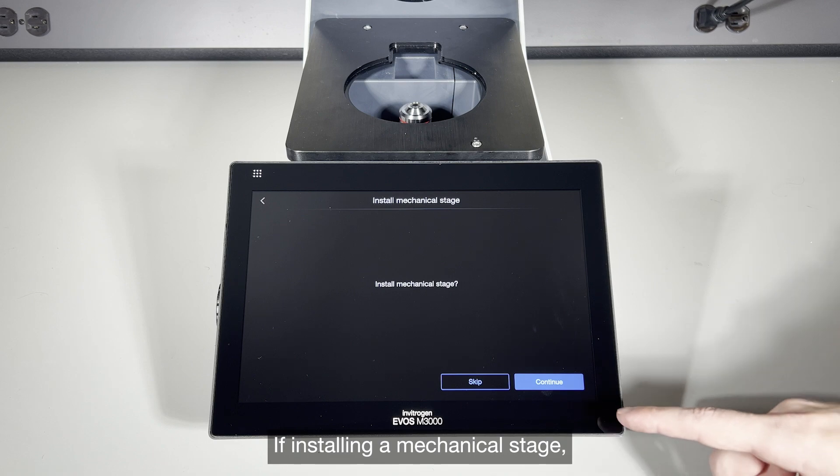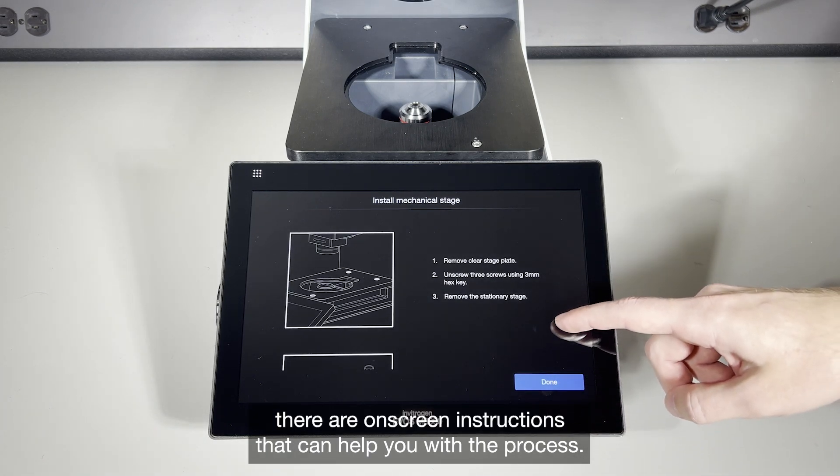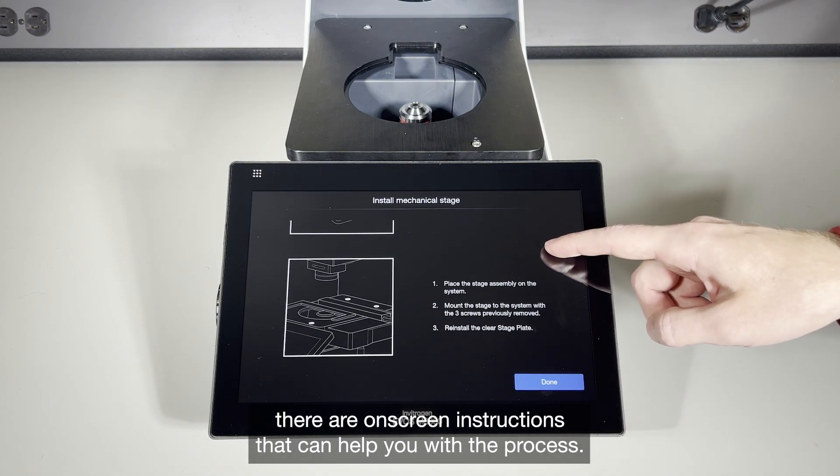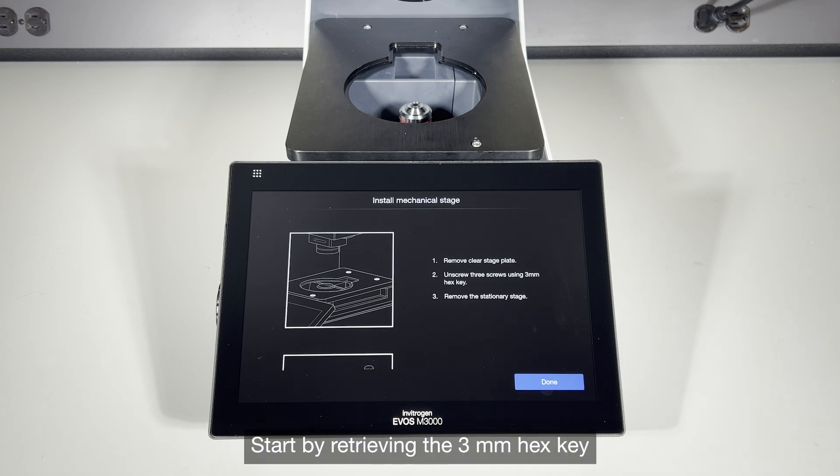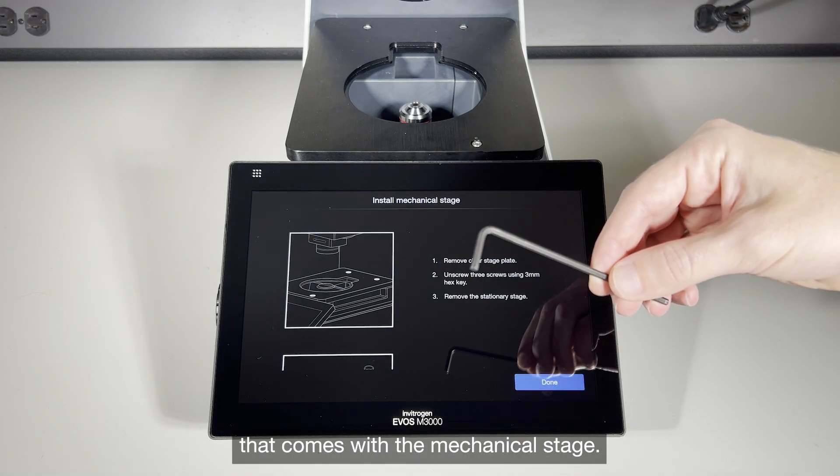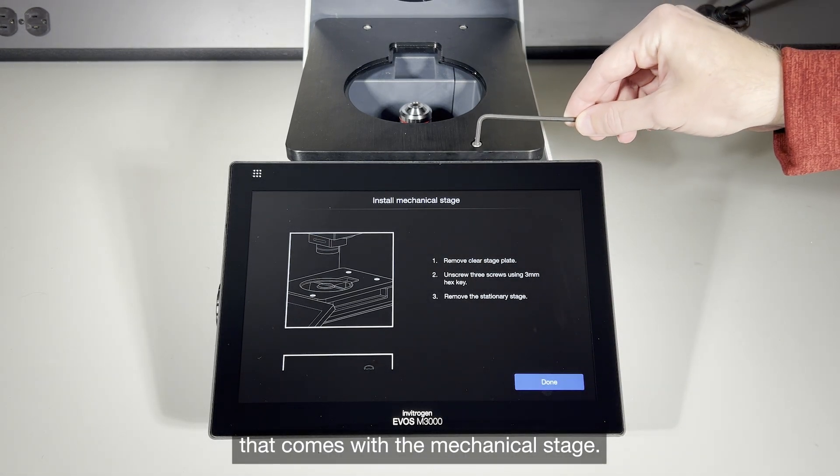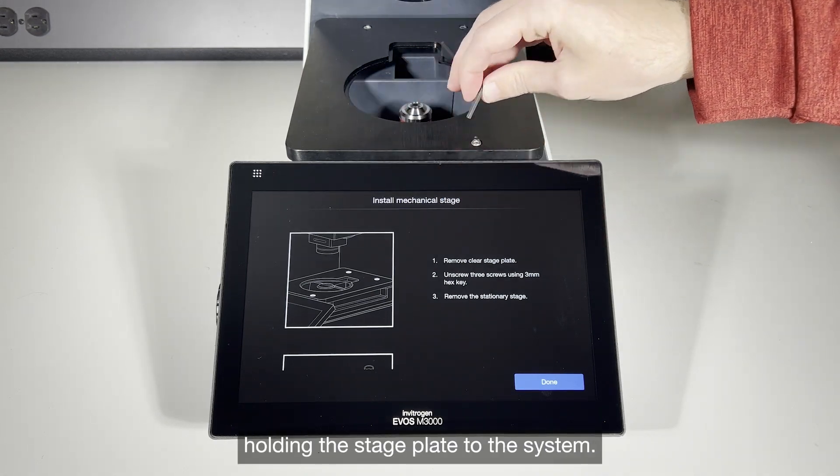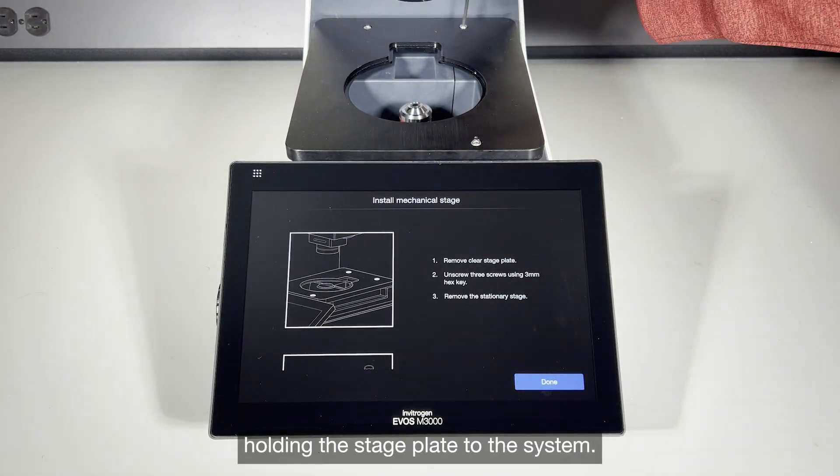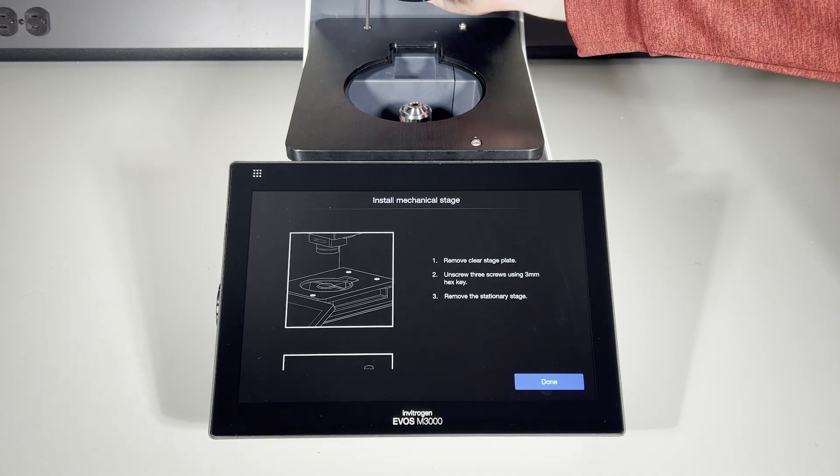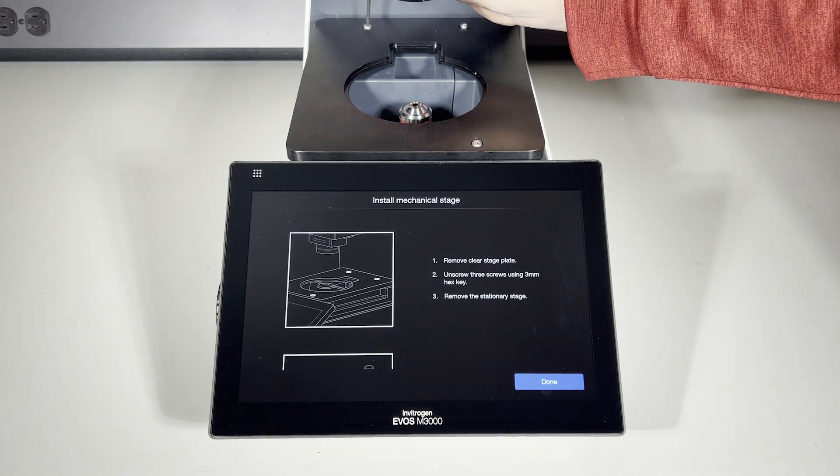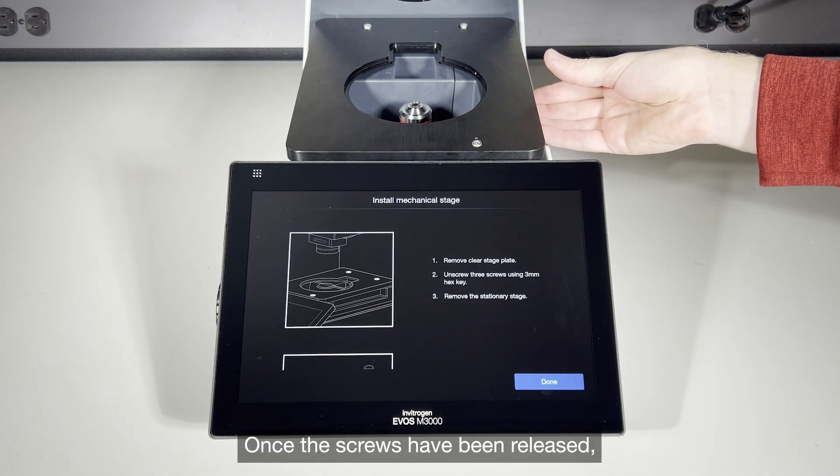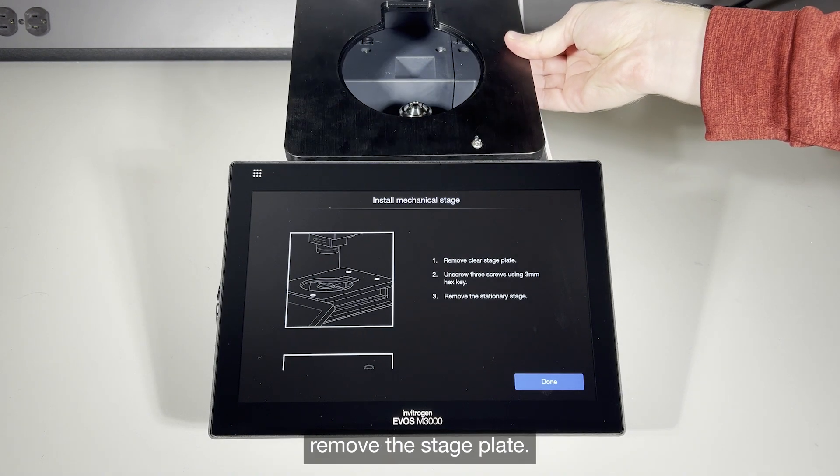If installing a mechanical stage, there are on-screen instructions that can help you with the process. Start by retrieving the 3mm hex key that comes with the mechanical stage. Use it to remove the three screws holding the stage plate to the system. Once the screws have been released, remove the stage plate.